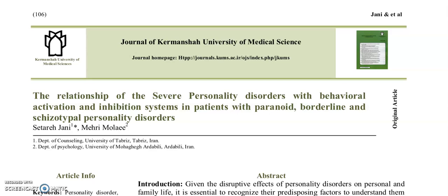Hello students. Today we're going to look at an academic article called The Relationship of the Severe Personality Disorders with Behavioral Activation and Inhibition Systems in Patients with Paranoid, Borderline, and Schizotypal Personality Disorders. This title gives us a lot of specific information, so if you were asked what is the topic of this article, you would basically have to write the full title as the topic.